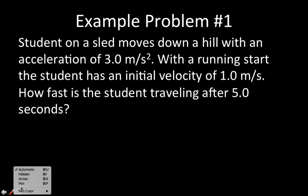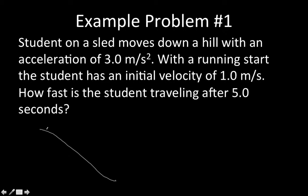Here's the first one we have. In this case, we've got a student on a sled — think Cascades. The student's on a sled moving down the hill with an acceleration of 3.0 meters per second squared. And if the student gets a running start, they have an initial velocity of 1 meter per second. The question is: how fast is the student traveling after five seconds?